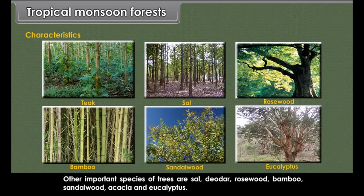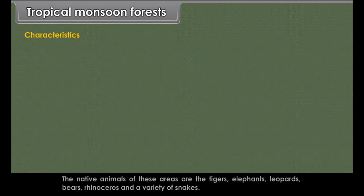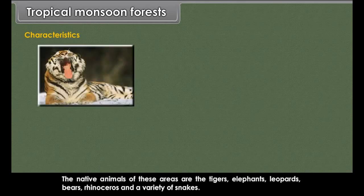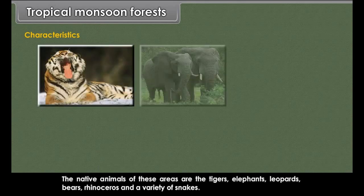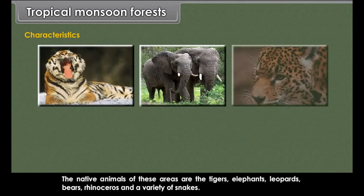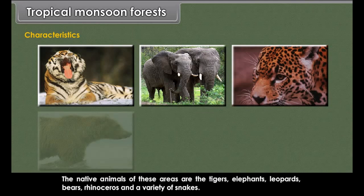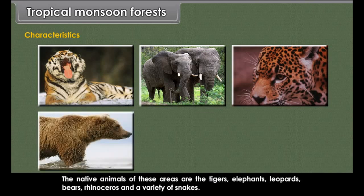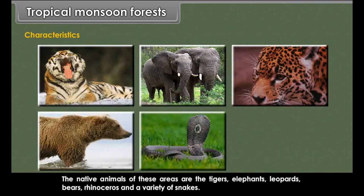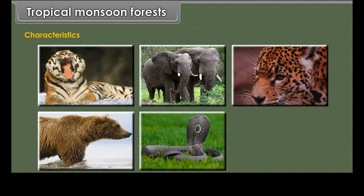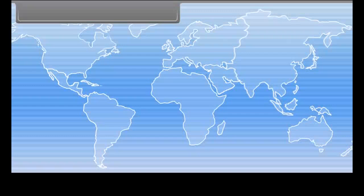The native animals of these areas are tigers, elephants, leopards, bears, rhinoceros and a variety of snakes. Lions are found in the Gir Forests of Gujarat.